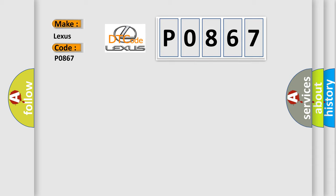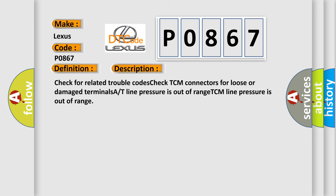The basic definition is A/T line pressure malfunction. And now this is a short description of this DTC code: Check for related trouble codes. Check TCM connectors for loose or damaged terminals. AT line pressure is out of range. TCM line pressure is out of range.